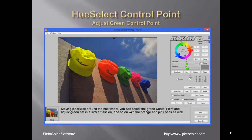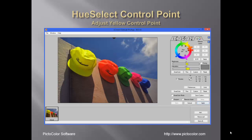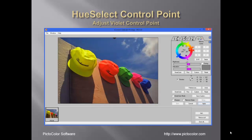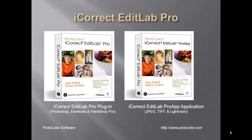Moving clockwise around the hue wheel, we select the green control point and make similar adjustments. Next, we adjust the yellow, then the orange, and finally the violet, and we are finished.